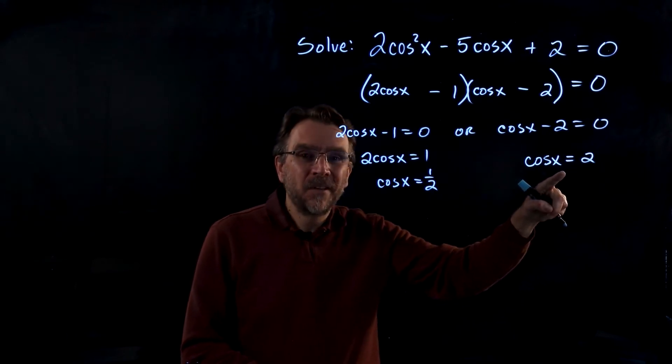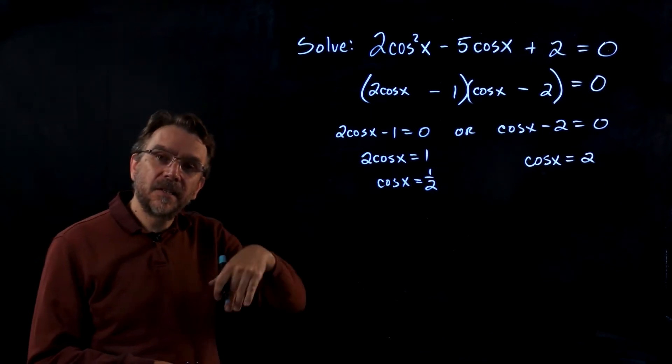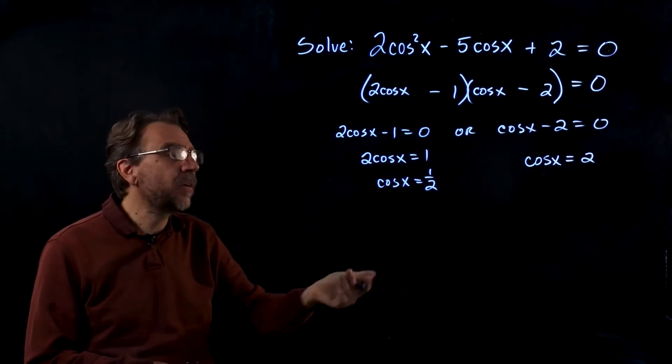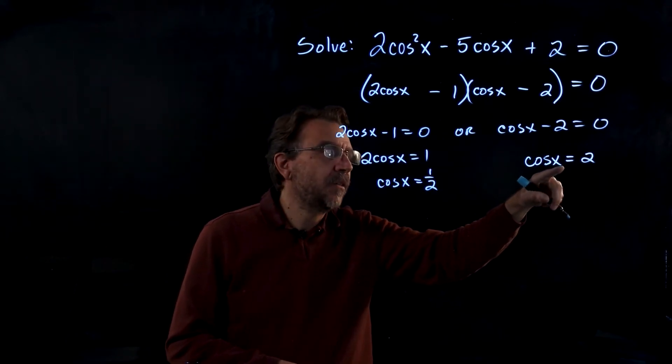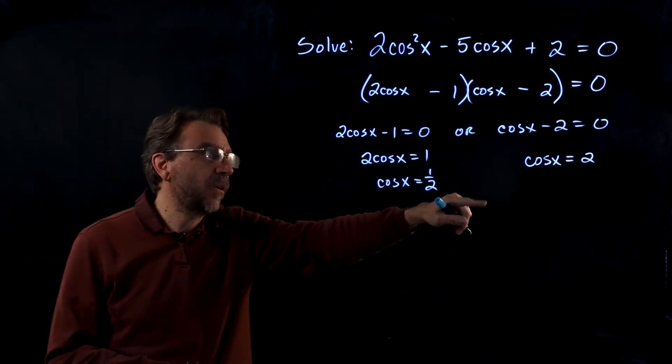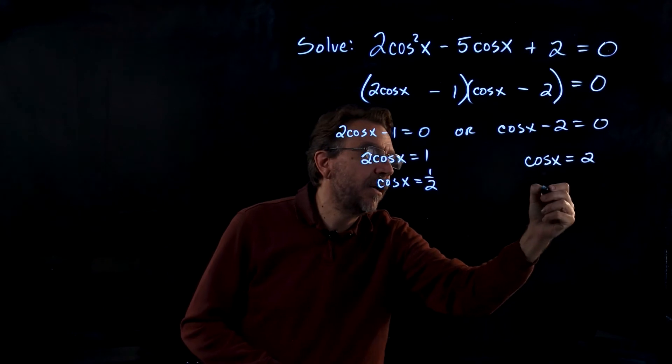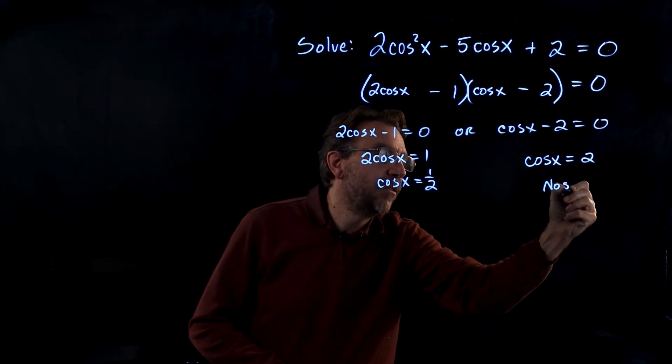Now for this term, cosine x equals 2, we know cosine oscillates between negative 1 and 1. Cosine can't be 2. Also if you use a calculator, you can look at cosine inverse of 2, see that you get an error. This has no solution.